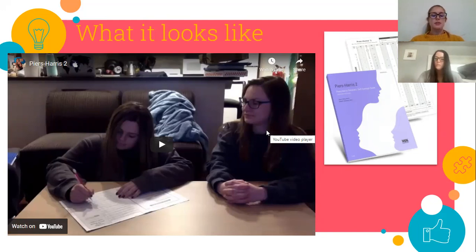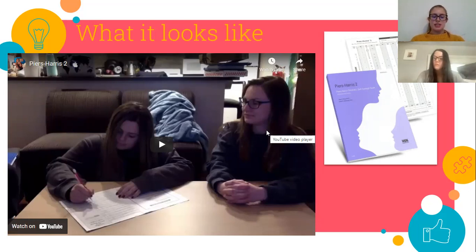Next, we calculate the responding bias index raw score by counting all of the yes answers of the 60 items. To calculate the raw total self-concept score, count all of the items in which a one was circled in the first set. To calculate the raw score for each domain, locate each one that is circled and put check marks in the boxes that are in the same row. Count the number of check marks corresponding to each domain scale and enter these totals in the correct spaces at the bottom of the scoring worksheet.